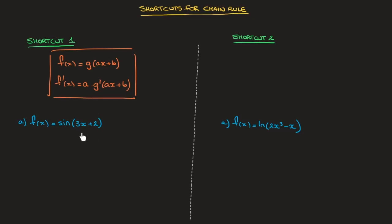Let's illustrate how it works with the example we have here. We need to differentiate f of x which is equal to sine of 3x plus 2. This is clearly a composite function and the inner function, 3x plus 2, is a linear function. All we really have to do is note the number multiplying x inside our linear function, which is 3. Using the fact that the derivative of sine is cosine, we can quickly state that f dash of x is equal to 3 times cosine of 3x plus 2. And that's the answer.